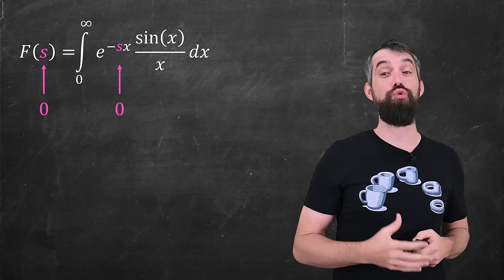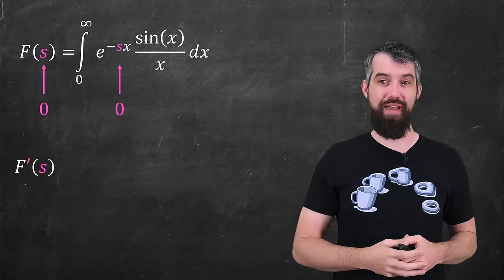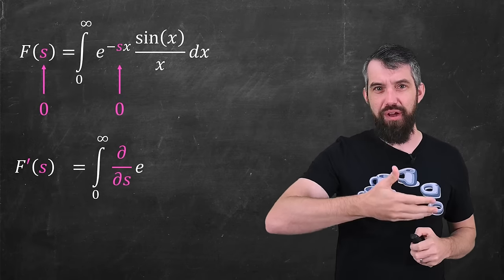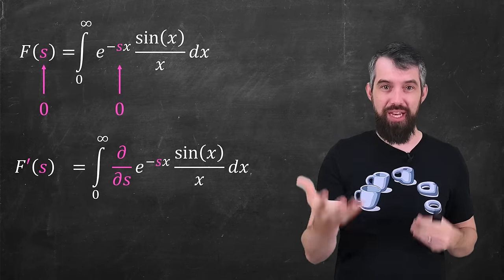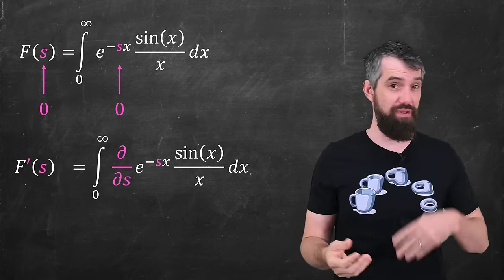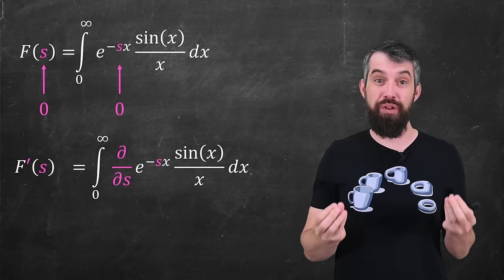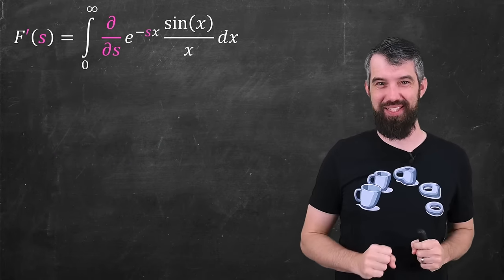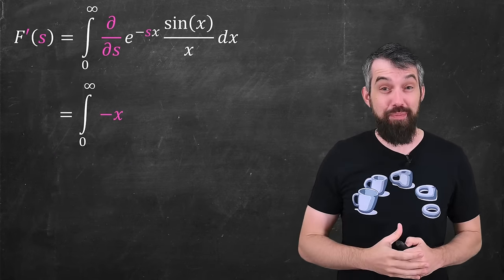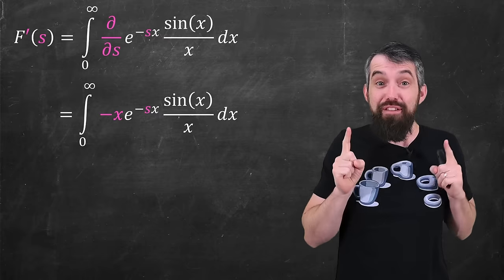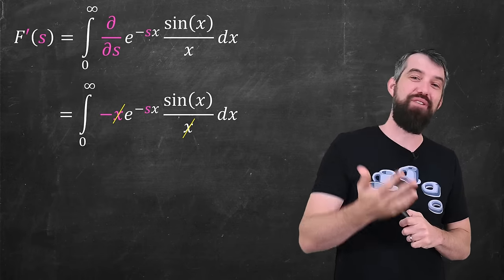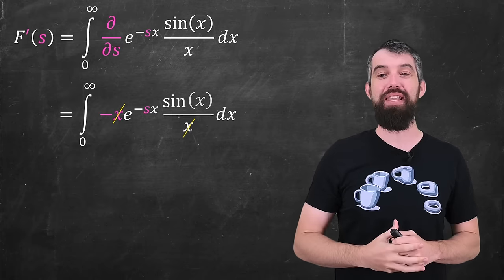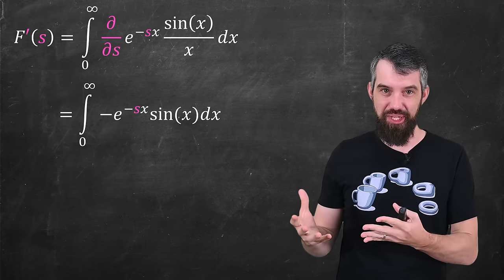Well, what I'm next going to do is take the derivative of the function f of s with respect to s. And that derivative, when I take it inside of the integral, becomes a partial derivative. There's the variable s, there's the variable x. I'm taking the derivative with respect to s. I'll give myself some more space. And notice how wonderful this is. Now when I take the derivative with respect to s, it pops out a factor of x out the front. The factor of x cancels with the x that was down on the bottom.